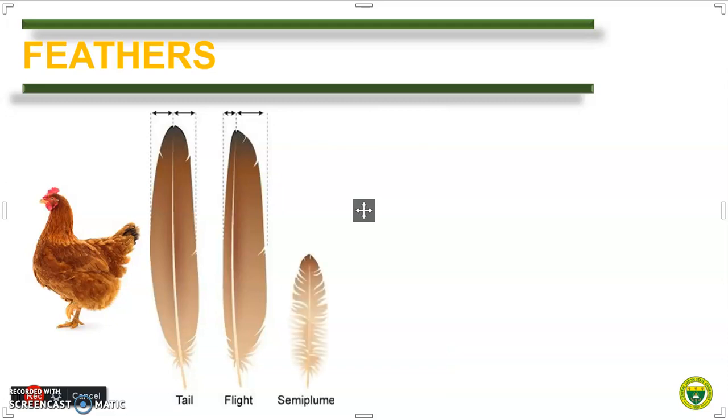The semi-plume feather is a cross between the down and the contour feathers. Unlike the down, they do have a well-developed and formed shaft. However, they do not have well-developed barbicels which make them soft. They are found underneath contour feathers and are used for insulation.